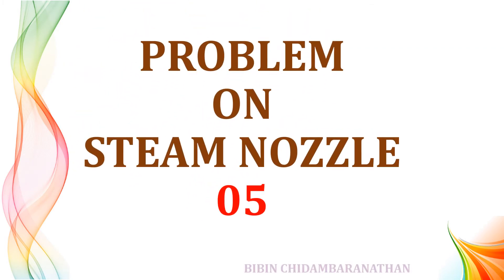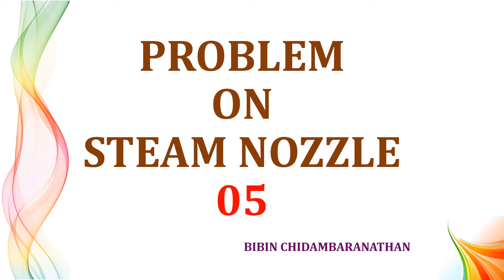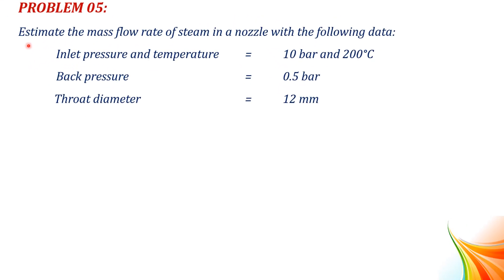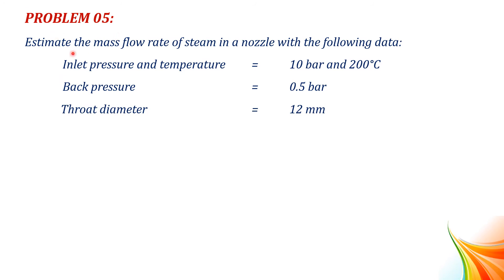Good morning and welcome to this session on Solving Problems on Steam Nozzle. Problem 5: Estimate the mass flow rate of steam in a nozzle with the following data — inlet pressure and temperature equal to 10 bar and 200 degrees centigrade, back pressure equal to 0.5 bar, and throat diameter equal to 12 mm.